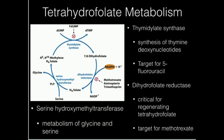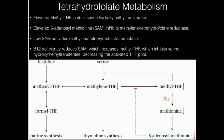Tetrahydrofolate is critical for nucleotide synthesis. For example, DTMP — which is ultimately thymine — requires N5,N10-methylene tetrahydrofolate. The conversion of serine to glycine also requires tetrahydrofolate, as does the synthesis of S-adenosylmethionine.